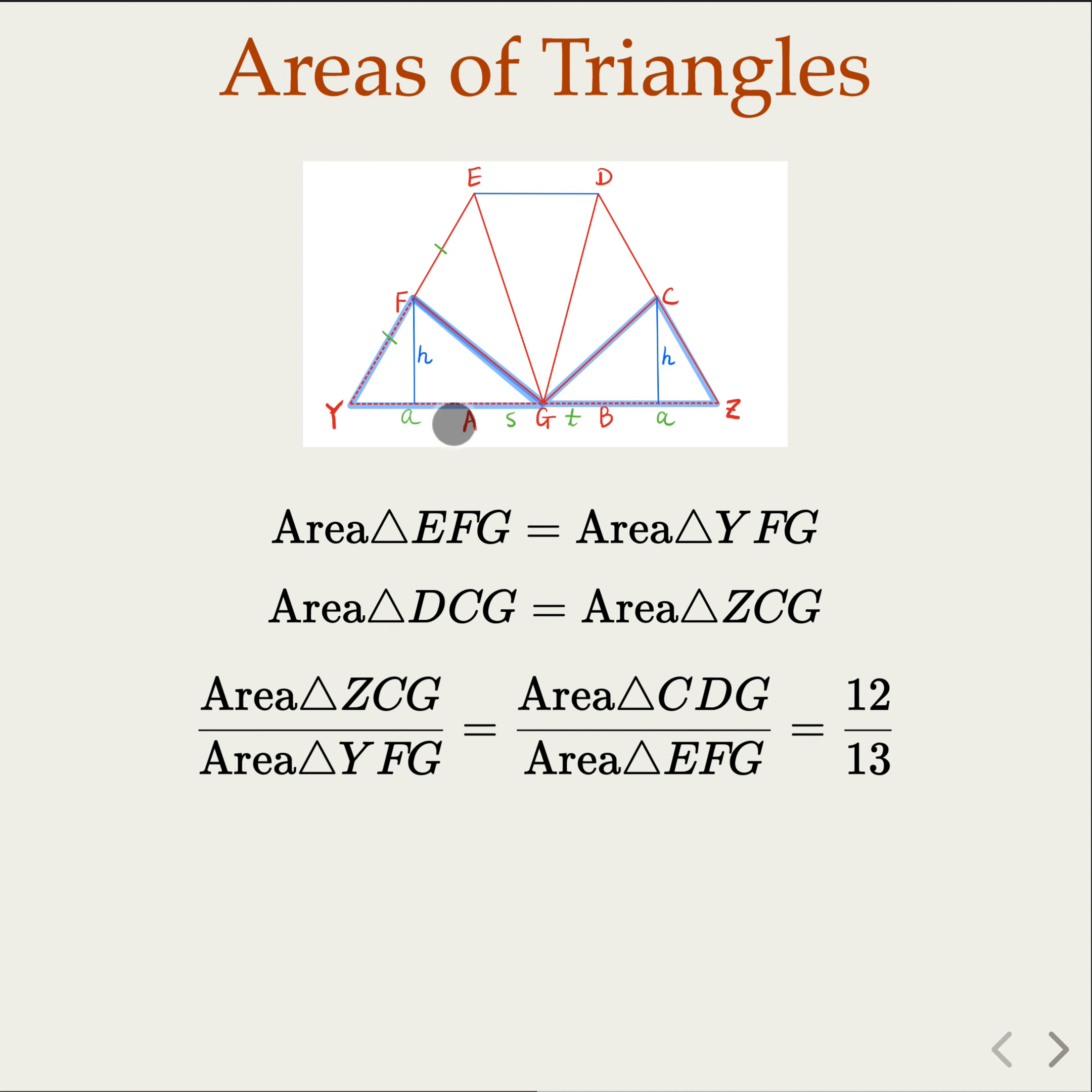So which means the area ratio is going to be the ratio of the base. What is the base? Yeah, the base is going to be GZ and YG. In other words, we know this ratio is 12 over 13. That is GZ over YG.